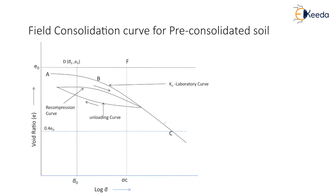If we extend the linear portion of curve ABC backwards, it will intersect line sigma naught D at point E. Here, point E lies on the right-hand side of point D — in the previous case, point E was on the left side of D. In the case of pre-consolidated soil, point E always lies on the right-hand side of point D. It is obvious that there is recompression of the soil from a pressure of sigma naught bar to the pre-consolidation pressure sigma c bar.